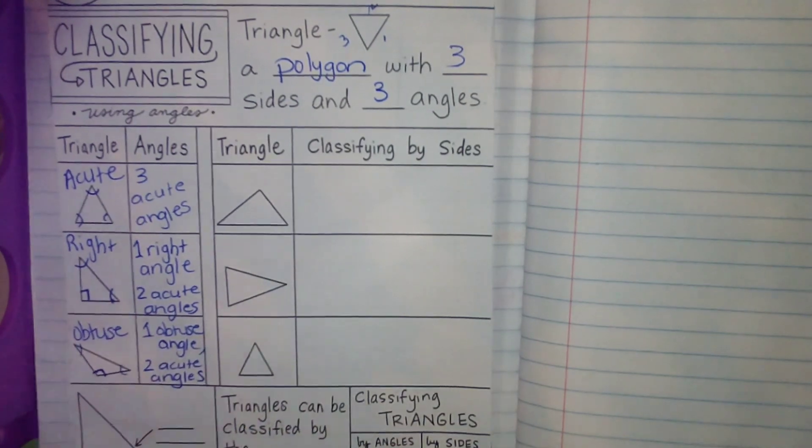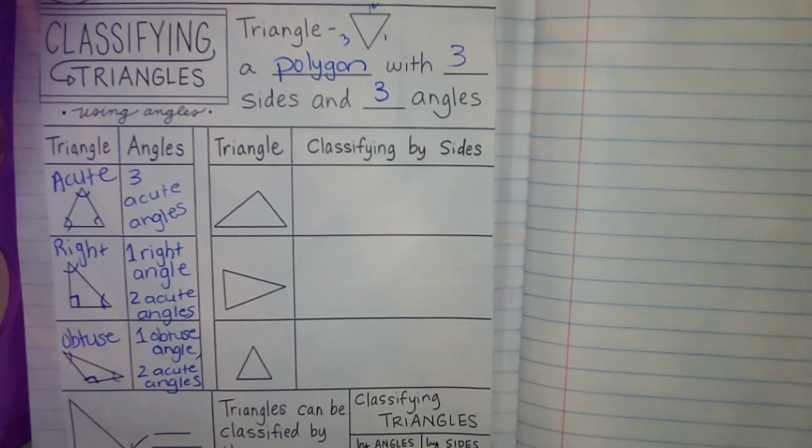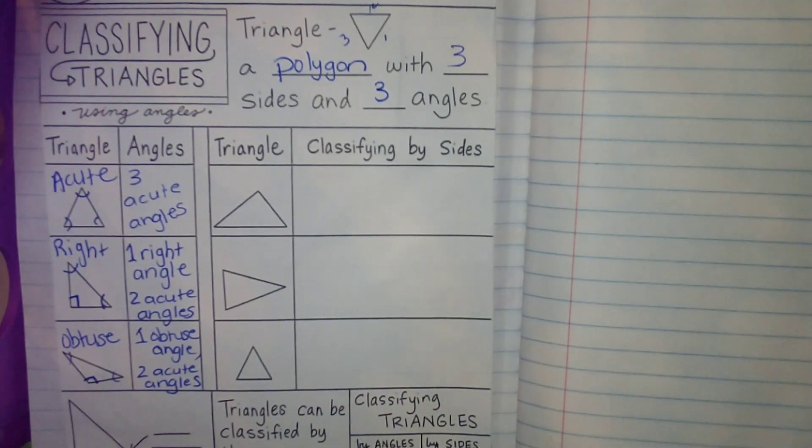Now, I went fairly quickly over those because that was what was in our last lesson when we were talking about classifying shapes, polygons. I went over that pretty quickly because that was a review. When we did classifying shapes, we did go over those three kinds of triangles.